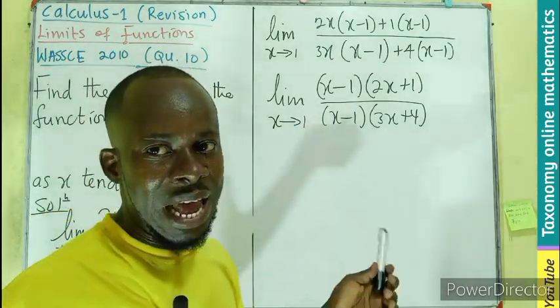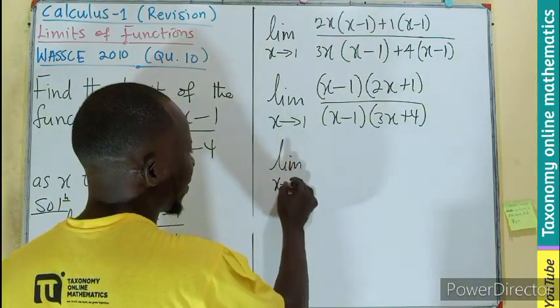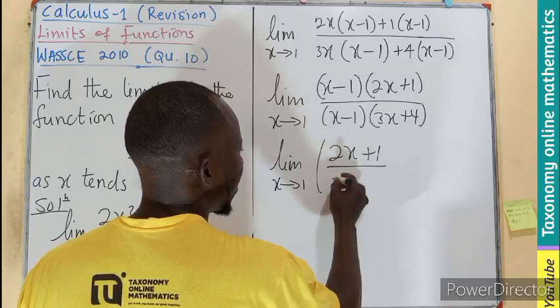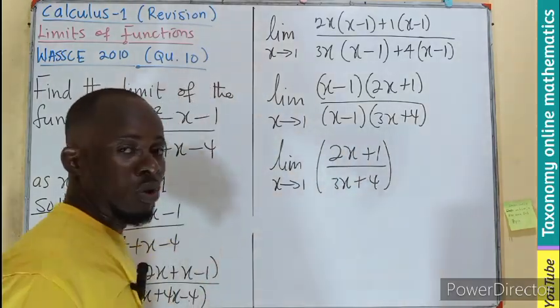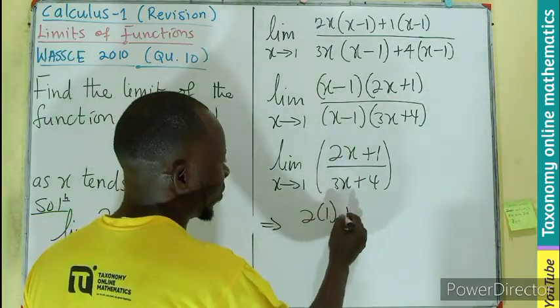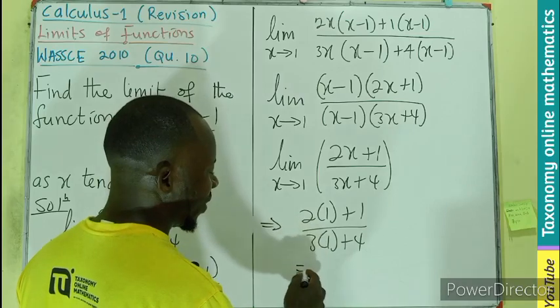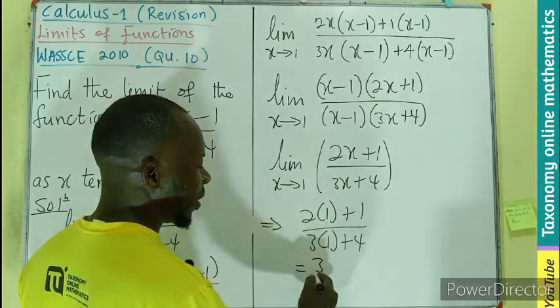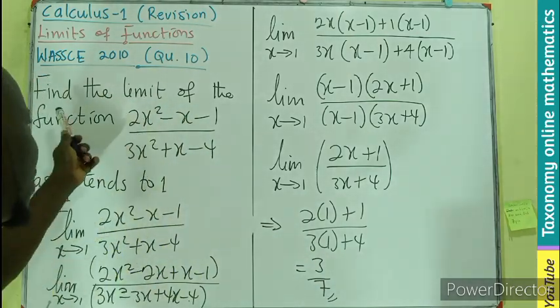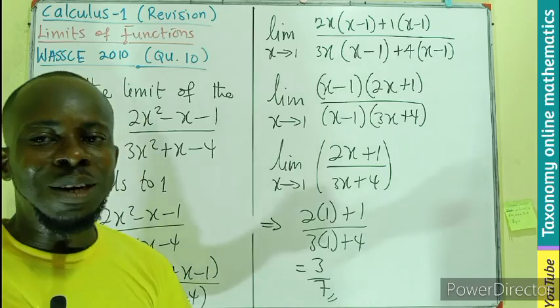Alright, I can see x minus 1, x minus 1, so they can easily cancel out. So I'll be having the limit as x is still approaching 1, this and this cancel, so I'll leave with 2x plus 1, 3x plus 4. So now I can put in the value of x here, and that will be 2(1) plus 1, 3(1) plus 4. What do I get? I'll be having the value of 2 plus 1, 3, 3 plus 4, 7. So the value of this as x is approaching or tending to 1 will give us the value as 3 out of 7.